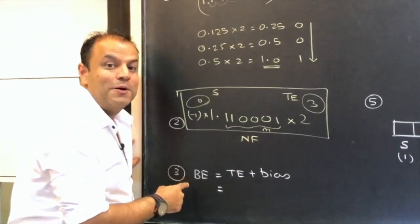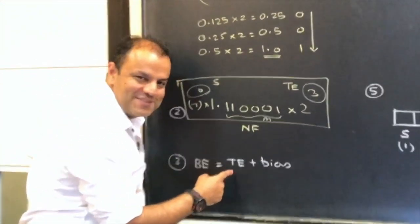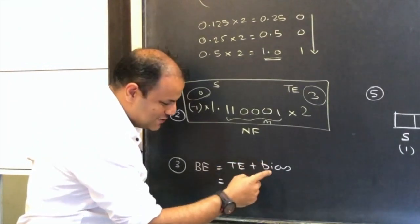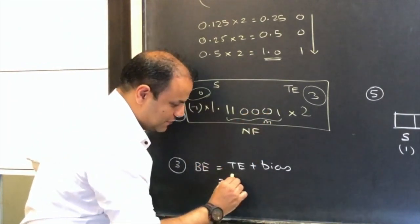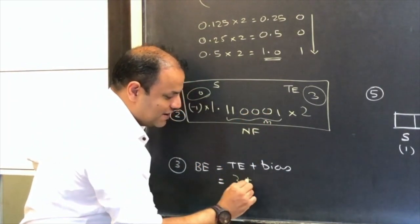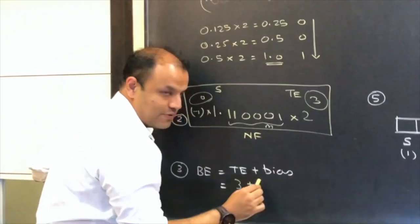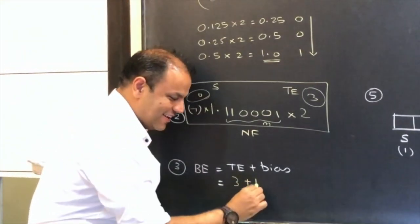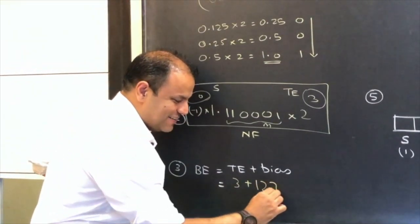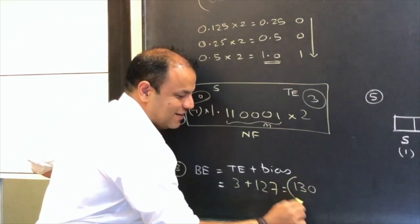Now calculate the biased exponent. Biased exponent = true exponent + bias. True exponent is 3. Bias value for single precision is 127. So the biased exponent is 3 + 127 = 130. That's your third step.